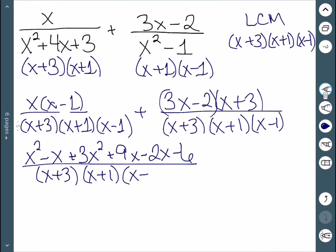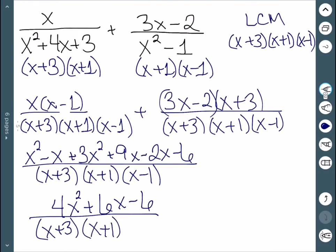Now we simplify. I have 4x squared. I have negative x plus 9x minus 2x, which gives me plus 6x. Then I have minus 6, all over the common denominator (x plus 3)(x plus 1)(x minus 1).